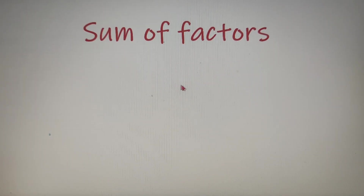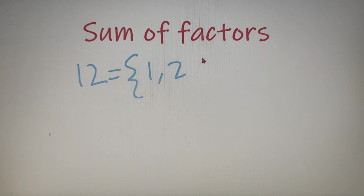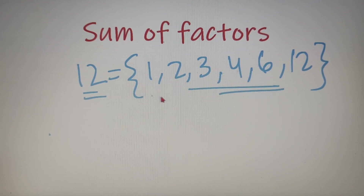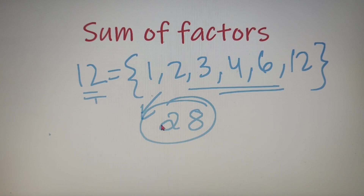Now factors of a number are nothing but the numbers which are less than or equal to it and which divide the given number. So for example, if I have the number 12, then all the factors of number 12 are: 1, 2, 3, 4, 6 and 12. All these 6 numbers divide the number 12, that's why they are called factors of 12. Now since we are interested in calculating the sum of factors, we will just add all the factors, which comes out to be 28. So the sum of factors of the number 12 is equal to 28.